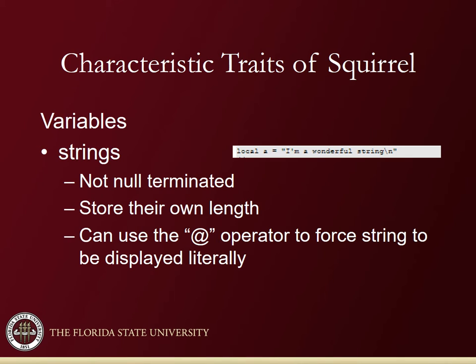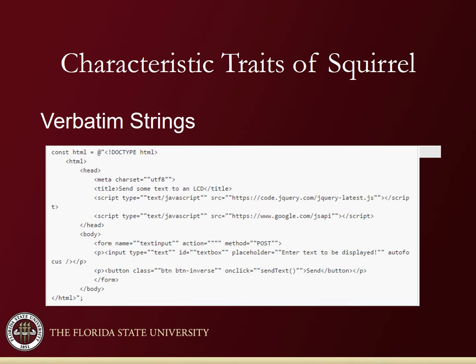The way strings are handled in Squirrel is that they are not null-terminated; they store their own length. Squirrel also allows the user to mark a string as verbatim, which allows the string to be displayed literally. Here's a snippet of code showing how this verbatim character is used — you have your HTML identifier and the HTML code placed in as a string, and when you print it, it can be output directly to the web page.